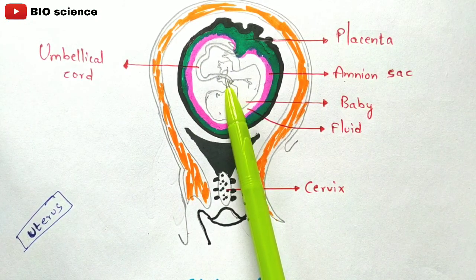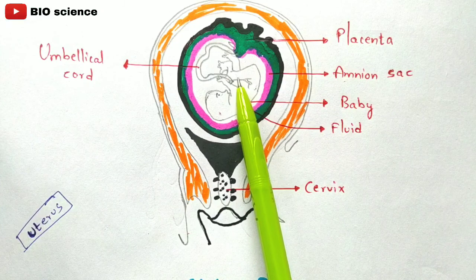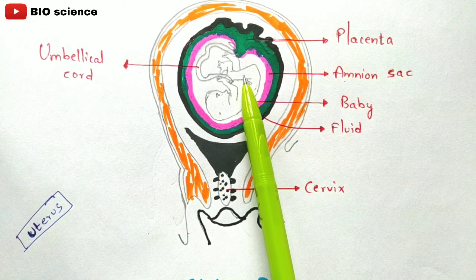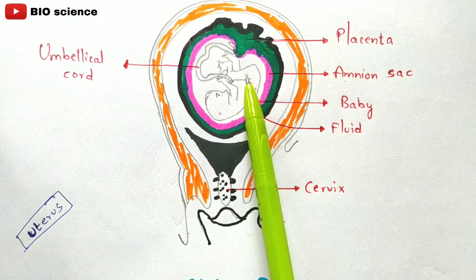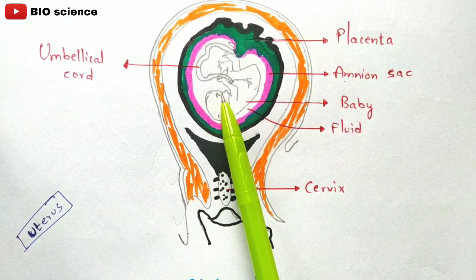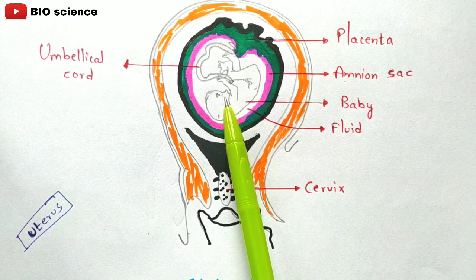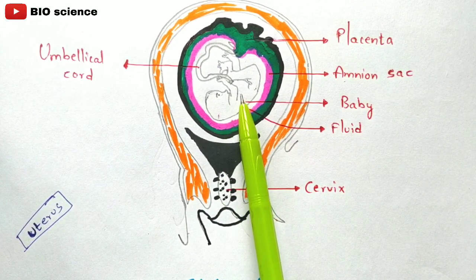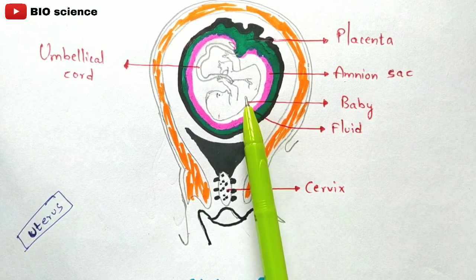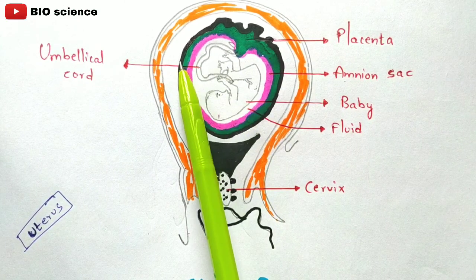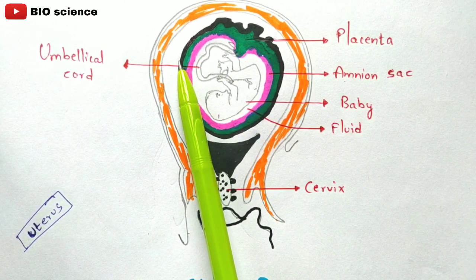After fertilization, the development of the baby will be done for nine months. For each and every month the size of the baby will gradually increase. This growth happens by taking nutritious food — once the lady gets pregnant, the doctor will recommend her to take nutritious food so that the development of the baby will happen in a good way.